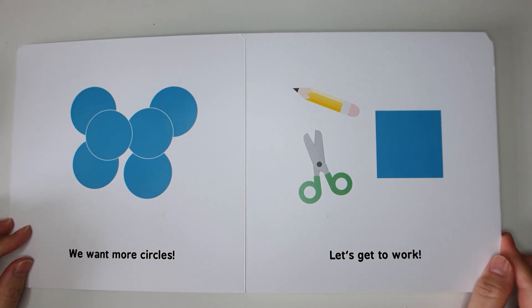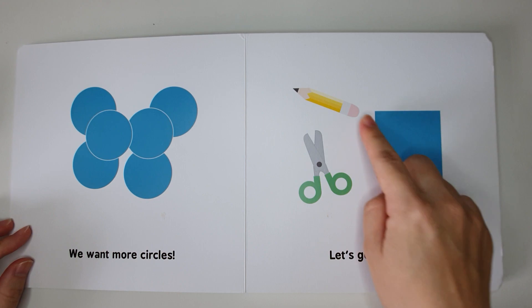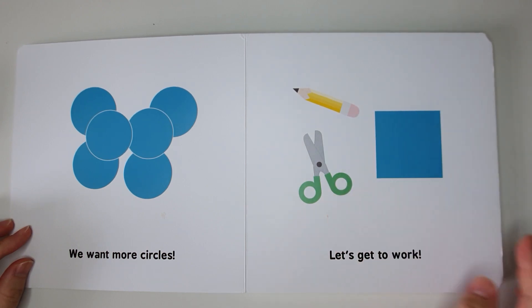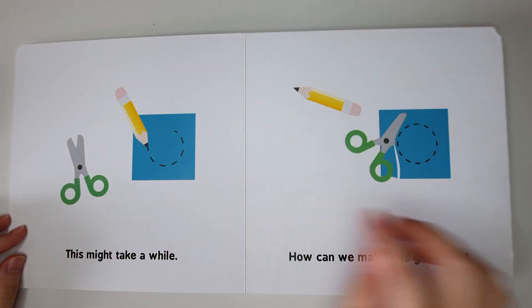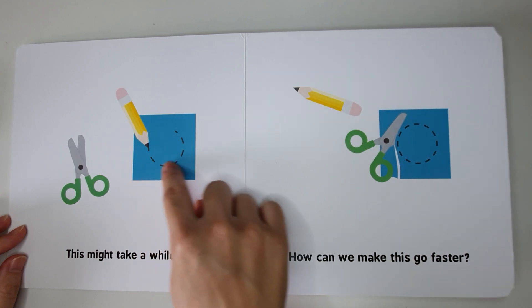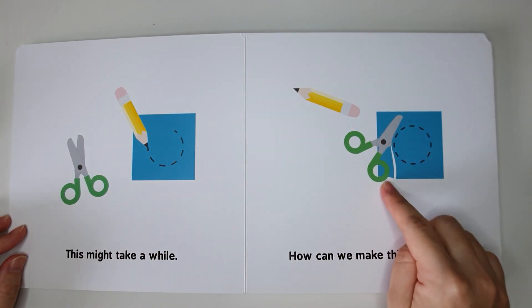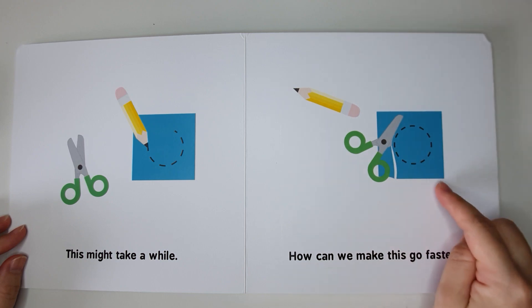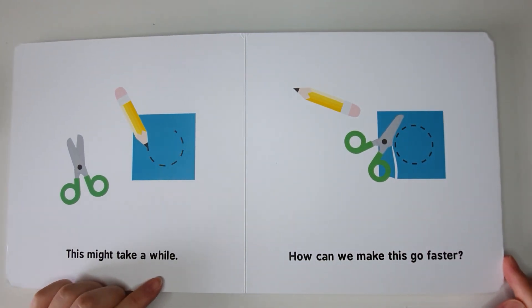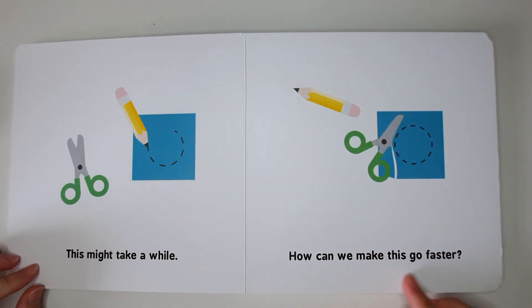We want more circles, so let's get to work. We will need a piece of paper, a pencil, and a pair of scissors. First, we use the pencil to draw a circle on the paper. Then, we use the scissors to cut the circles out from the paper. This might take a while. How can we make this go faster?